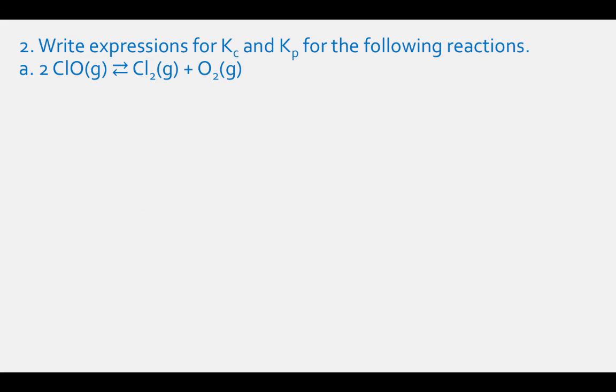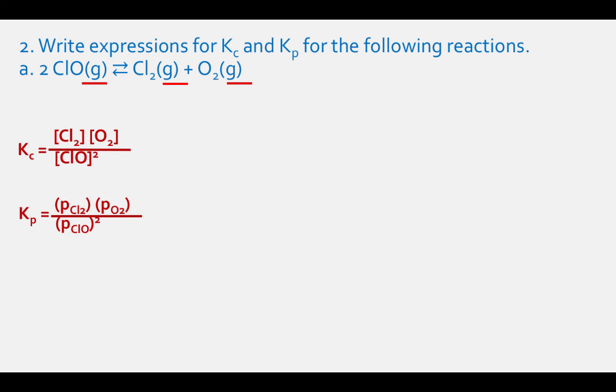For reaction (a), 2 ClO gas in equilibrium with Cl2 gas plus O2 gas, we have all gases. So Kc equals the concentration of Cl2 times the concentration of O2, divided by the concentration of ClO squared. The Kp expression is the partial pressure of Cl2 times the partial pressure of O2, divided by the partial pressure of ClO squared.